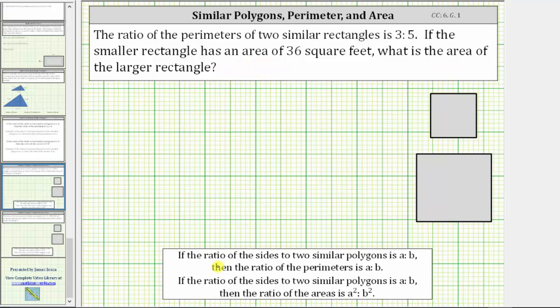Looking at our formal notes below, if the ratio of the sides of two similar polygons is a to b, then the ratio of the perimeters is also a to b. However, if the ratio of the sides of two similar polygons is a to b, then the ratio of the areas is a squared to b squared.